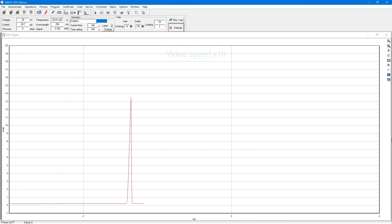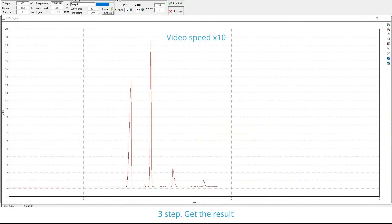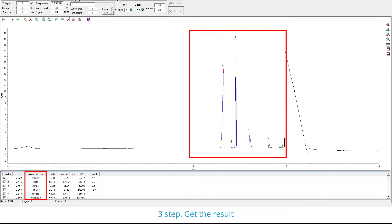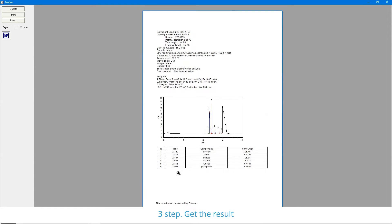The analysis is done. CAPEL 205 determines the concentration of six inorganic anions in water within just three minutes. You can save the obtained report on your PC and print.